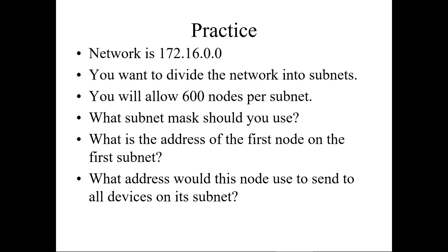Let's do some practice. We have a network which is 172.16.0.0. We want to divide the network into subnetworks — we don't know how many subnetworks, but we want 600 nodes per subnet. The question is: what subnet mask would we use? What's the first address? What's the last address?